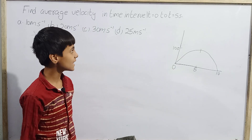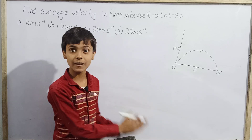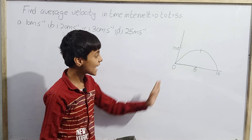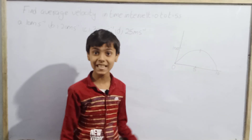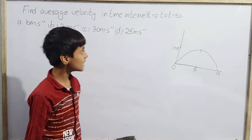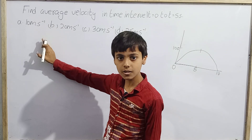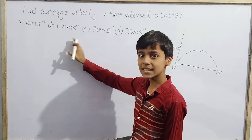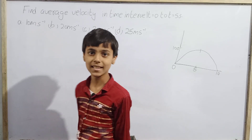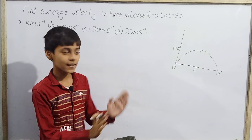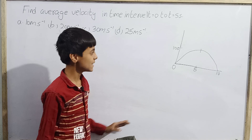I need to find my average velocity from t = 0 seconds to t = 5 seconds. The options are: 10 m/s, 20 m/s, 30 m/s, and 25 m/s.